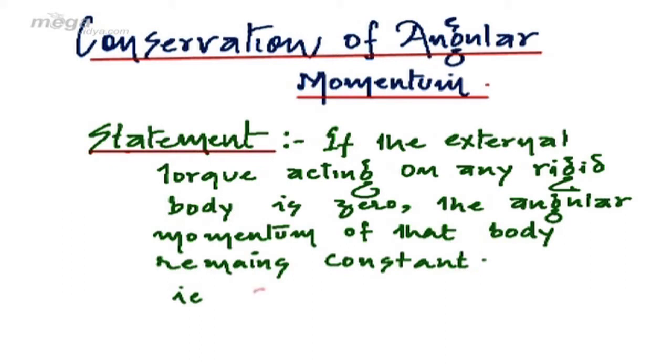That is, we can say if τ_net, that is the external torque, is equal to zero, it will imply L will be equal to constant.